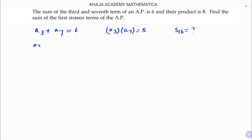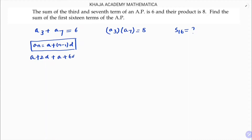The nth term formula is: a_n = a + (n−1)d. Using this, A3 = a + 2d and A7 = a + 6d. Adding them: A3 + A7 = 2a + 8d = 6.